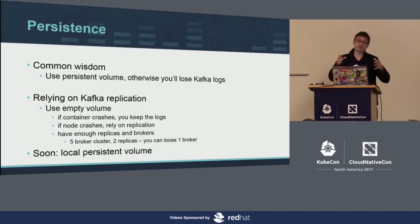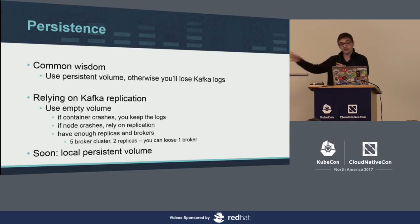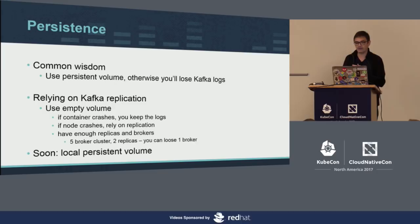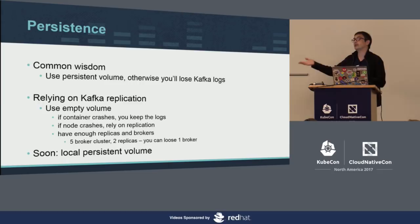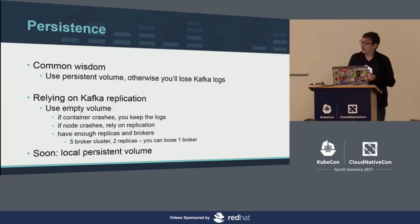One of the selling points of Kafka is replication — you have copies of your partitions replicated. When a pod spins up on a different node, it will eventually get in sync with the current leaders and be able to serve data. To do this, you need enough brokers and enough replicas. For example, with a five-broker cluster and two replicas, you can afford to lose one broker. What's coming soon in Kubernetes — currently in alpha — is local persistent volumes, where volumes are on a local machine and the pod is only scheduled on that machine. We'll be looking into that in the future.